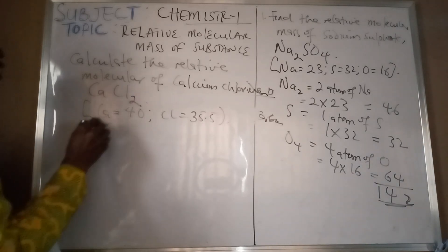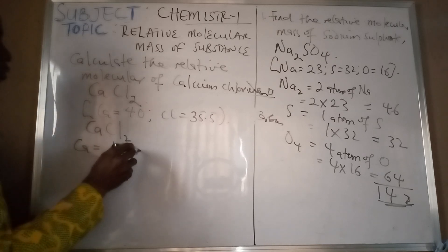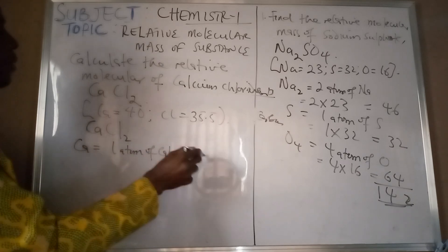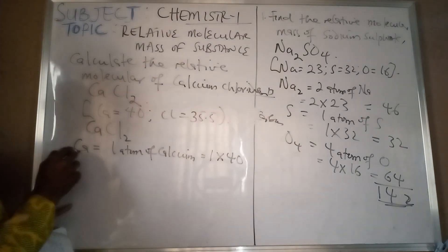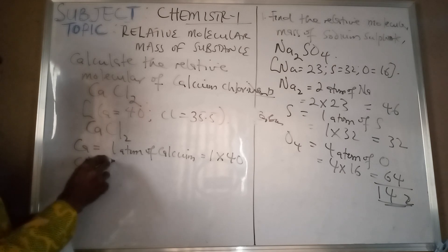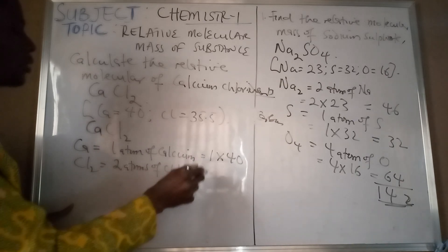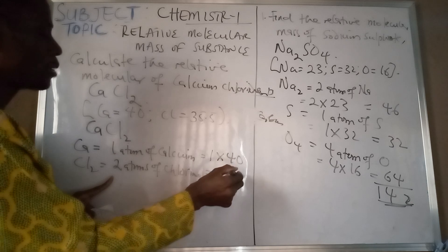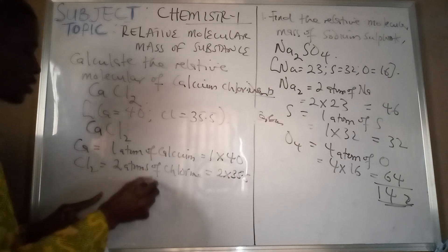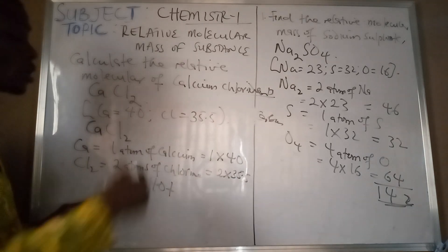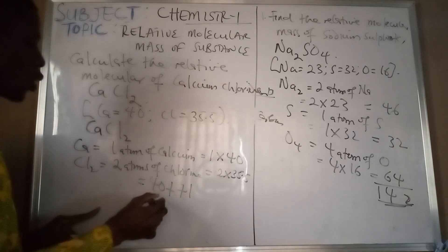The compound is calcium chloride. We have one atom of calcium, and our given relative atomic mass for calcium is 40, so that is 1 multiplied by 40. The second element is chlorine — we have two atoms of chlorine, so that is 2 multiplied by 35.5. Summing up: 1 times 40 gives us 40, and 2 times 35.5 gives us 71. So 40 plus 71 gives us 111.